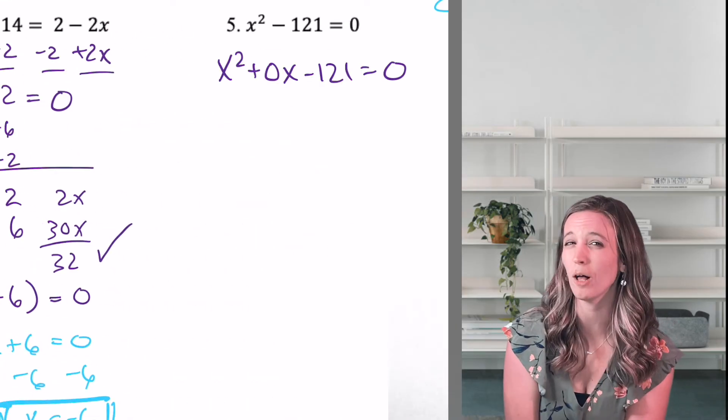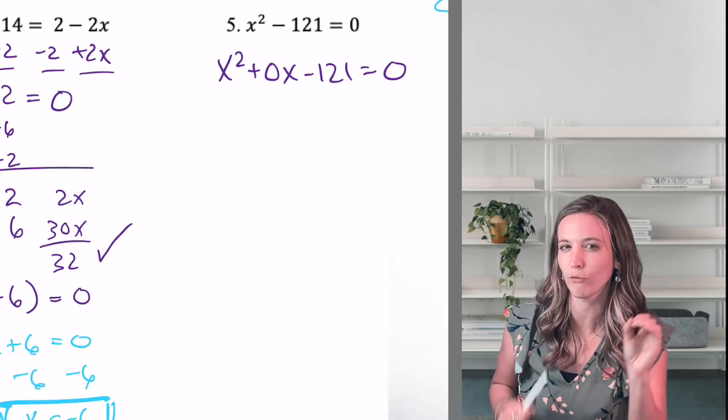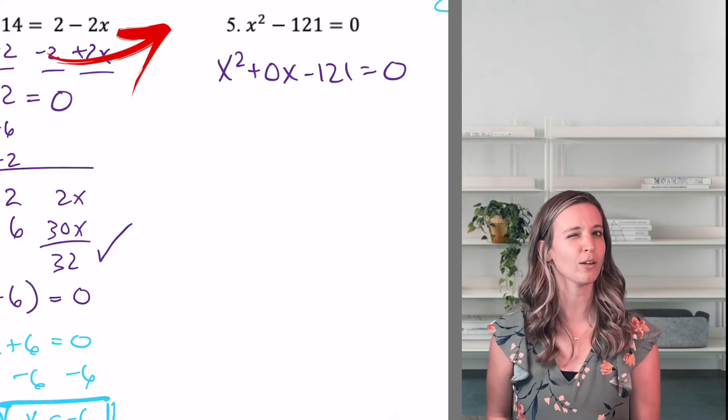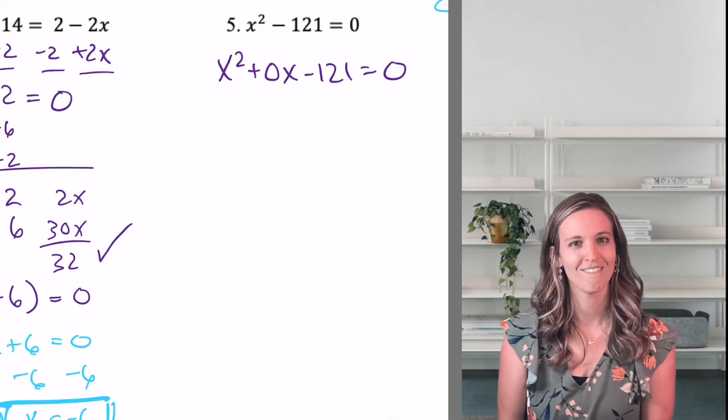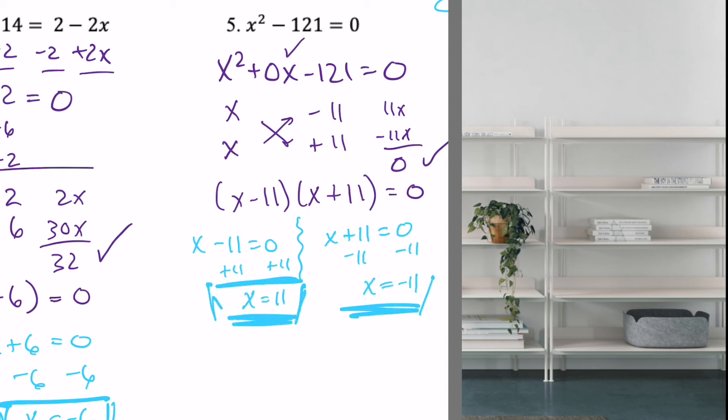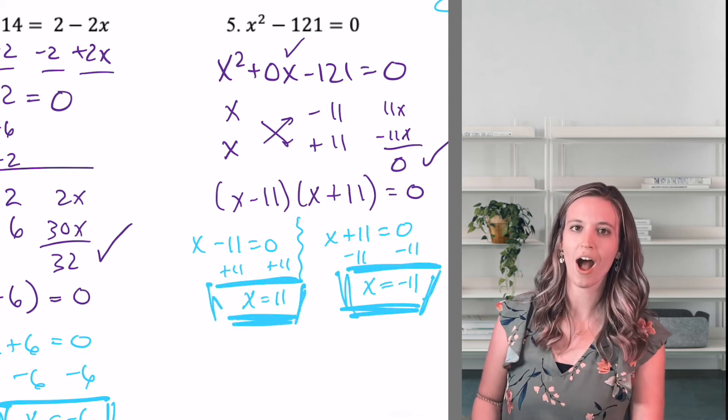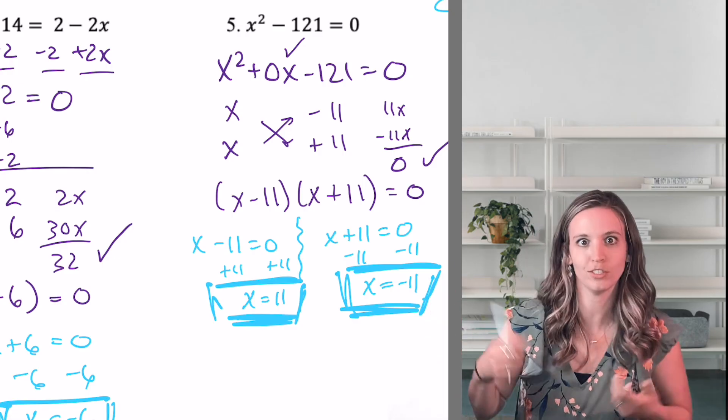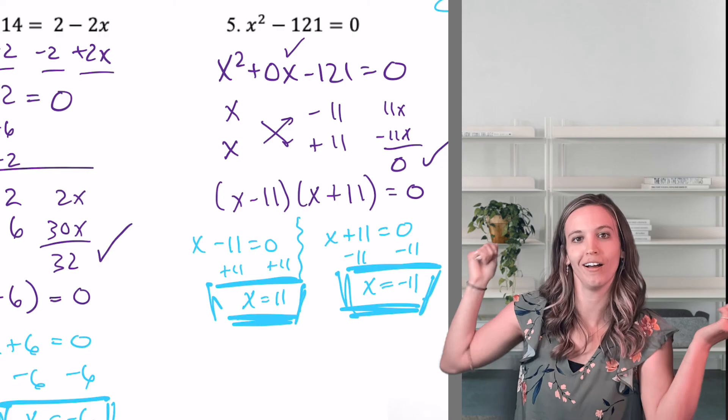Go ahead and try the next one. Remember, sometimes it helps to put that little zero X in the middle before you start using crisscross method. But eventually, we want you to recognize this as a difference of squares, right? 121, that's a perfect square. Factor, then solve. I got X equals 11 and X equals negative 11. Because negative 11 times 11 is negative 121.